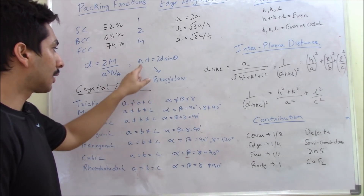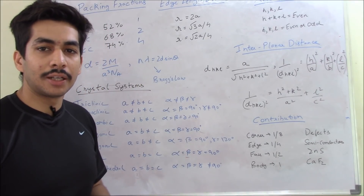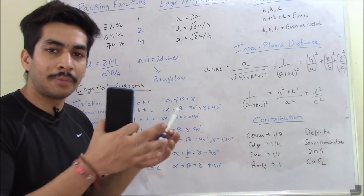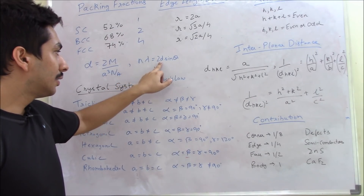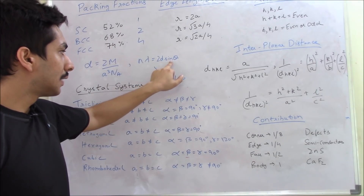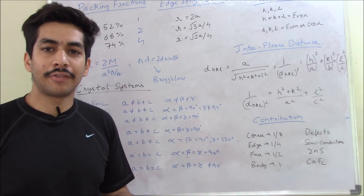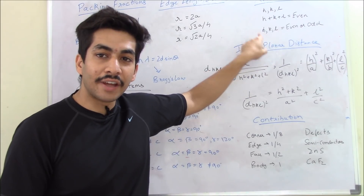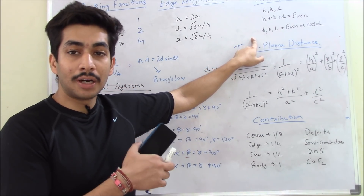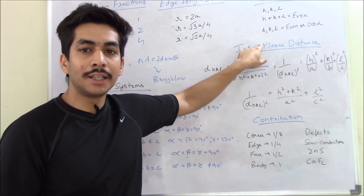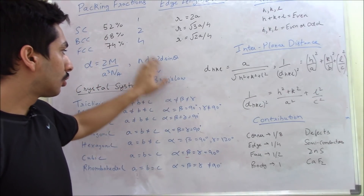The next thing you need to know is Bragg's law — this is again very important. N lambda = 2D sin theta. It looks like a simple equation but questions can involve Bragg's law combined with other concepts. Lambda is the wavelength, D is the interplanar distance, and sin theta is the angle by which it gets diffracted. This formula is used in XRD patterns and XRD diffraction. A lot of questions, especially in GATE and CSIR NET exams, are asked from this topic and many students are not able to answer. I will discuss XRD in a bit of detail even though this is a crash course.